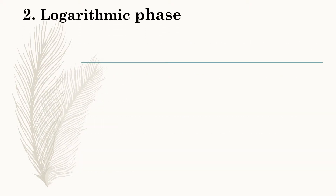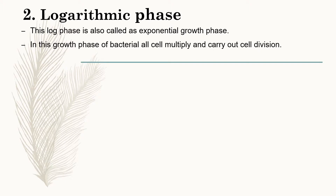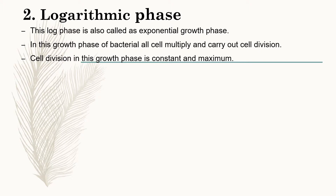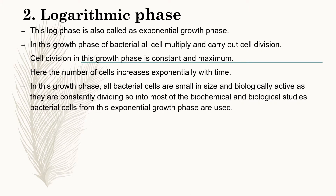The second phase of growth is the logarithmic phase, or log phase, also called the exponential growth phase. In this growth phase, all cells multiply and carry out cell division. Cell division is constant and maximum. Bacterial cells continuously multiply and divide at a constant rate, and the number of cells increases exponentially with time. All bacterial cells are small in size and biologically active as they are constantly dividing. In most biochemical and biological studies, bacterial cells from the exponential growth phase are used.